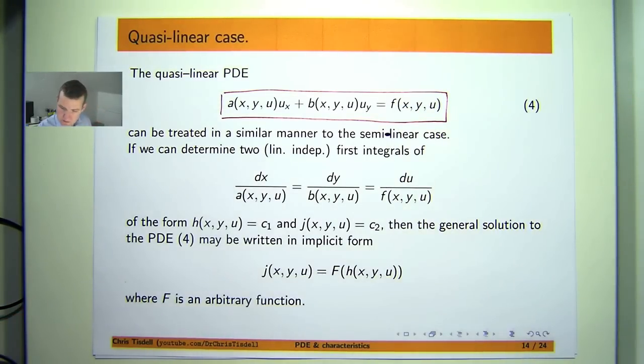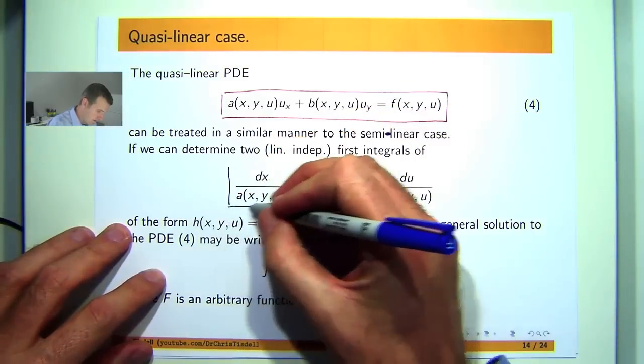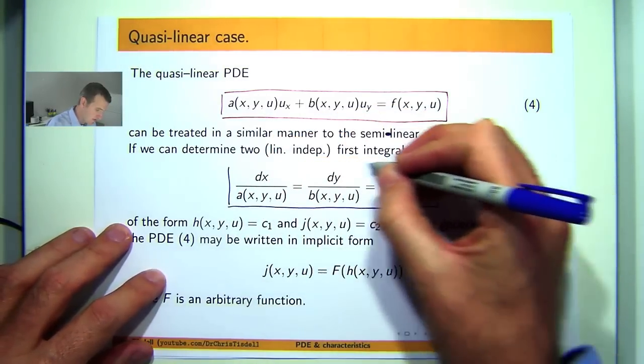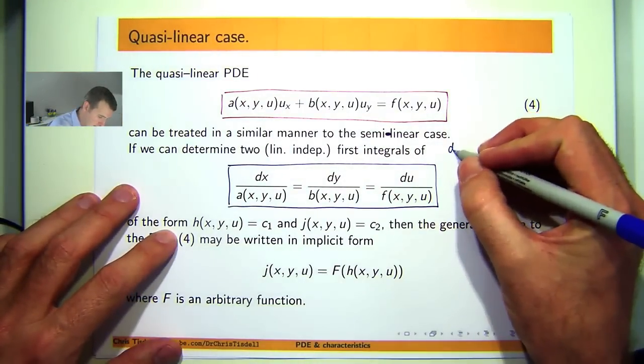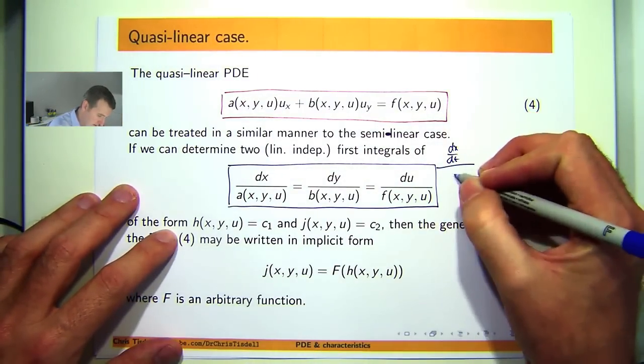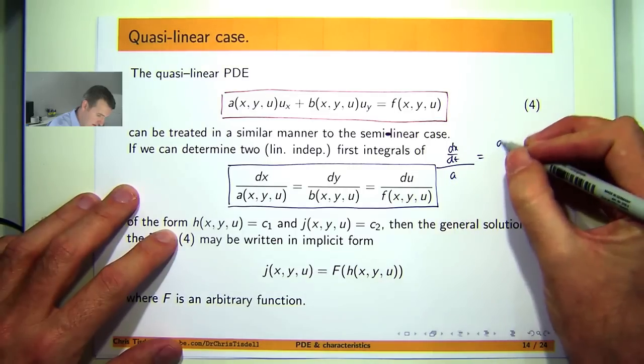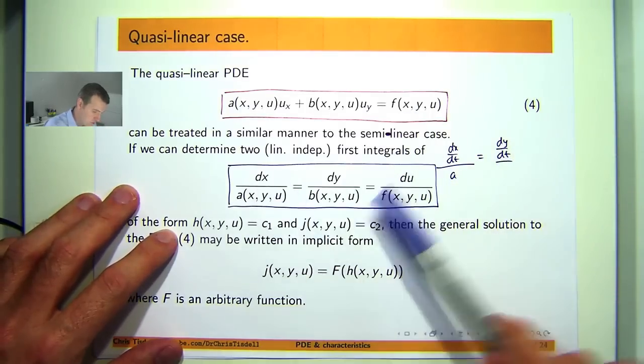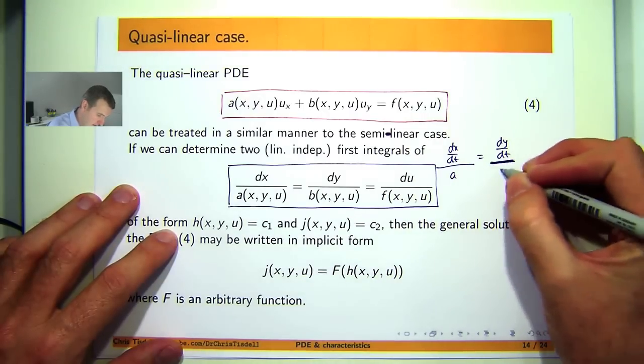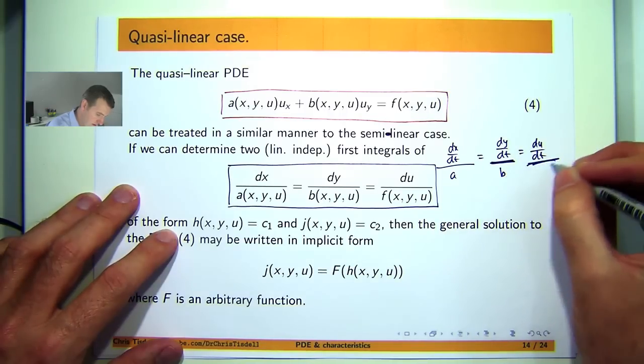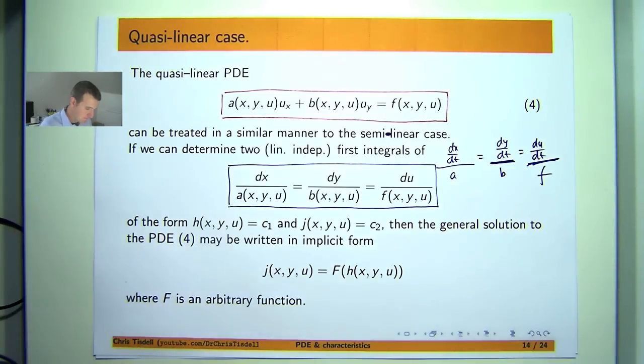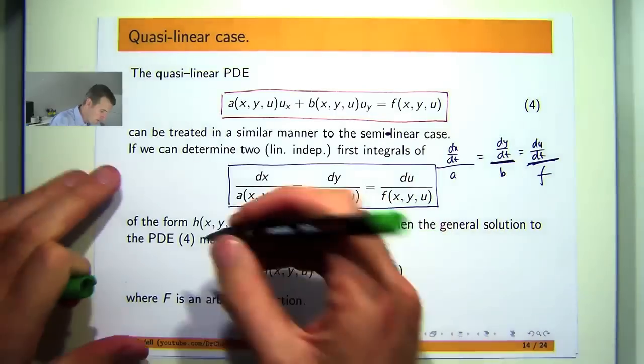So what we do is we form these kinds of differential type equations. Now by this I just mean the following. So this is a slightly more compact form, and you try to form two independent solutions.